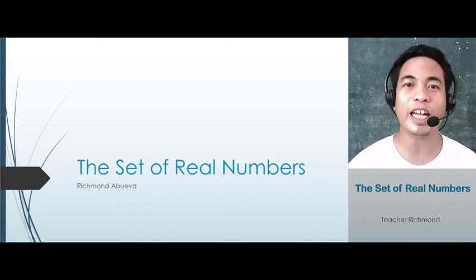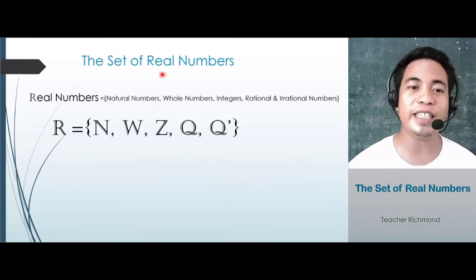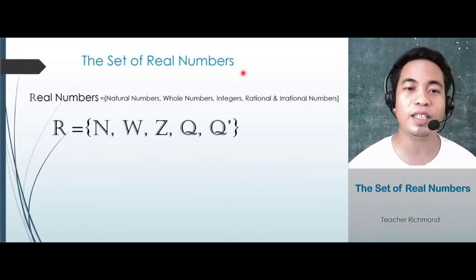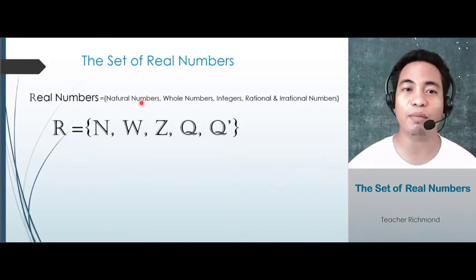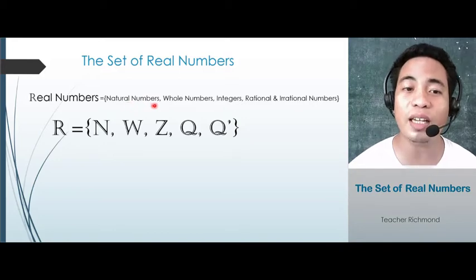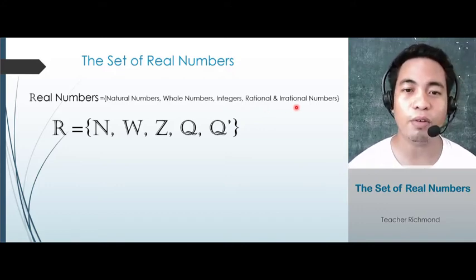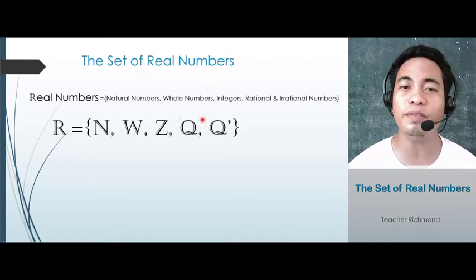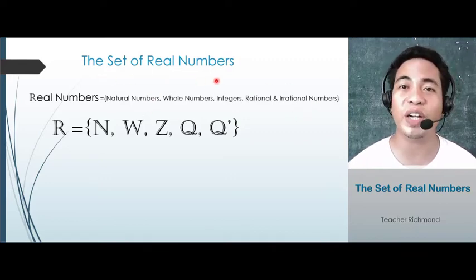We are going to study the set of real numbers. To fully understand the set of real numbers, we are going to look at all the elements of the set of real numbers. We have natural numbers, we have whole numbers, we have integers, we have rational and irrational numbers. If we are going to combine all of these, this will give us the set of real numbers.